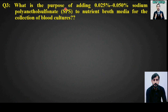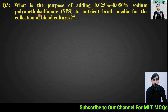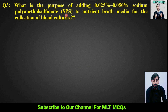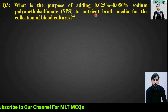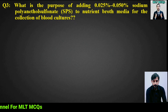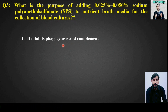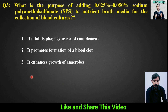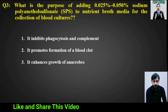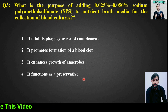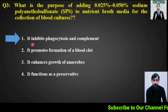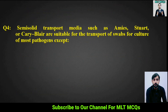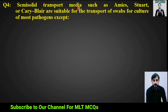MCQ number 3: What is the purpose of adding 0.025% to 0.050% sodium polyanethol sulfonate (SPS) to nutrient broth media for blood cultures? Options: (1) it inhibits phagocytosis and complement, (2) it promotes formation of a blood clot, (3) it enhances growth of anaerobes, (4) it functions as a preservative. The right answer is option 1: it inhibits phagocytosis and complement.